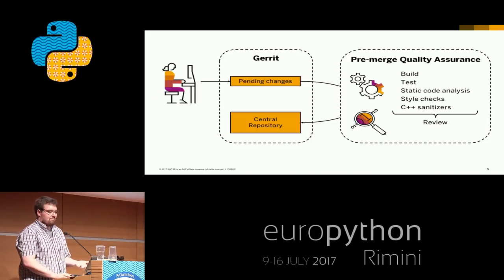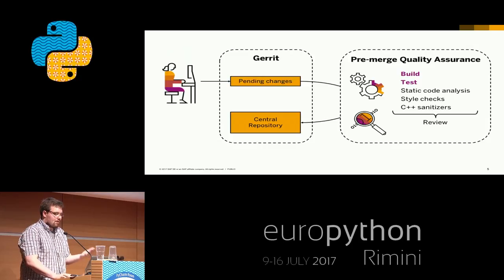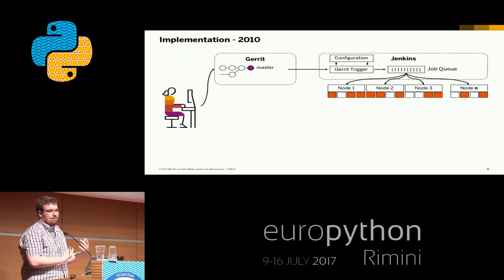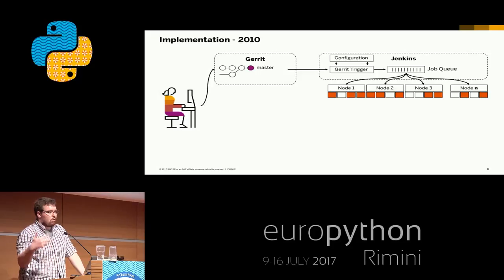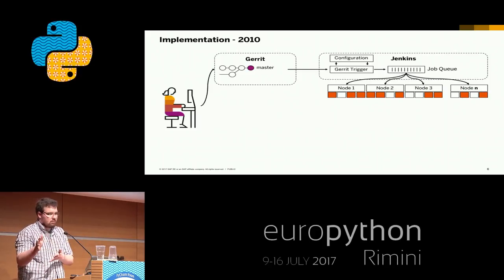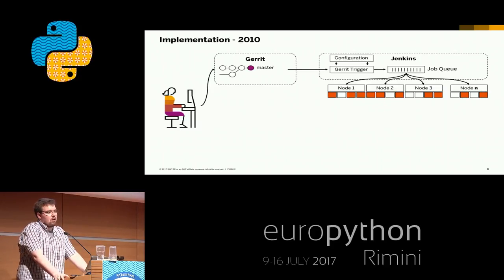To build something like this — it's a very straightforward continuous integration landscape. The developer pushes to Gerrit. Gerrit notifies our Jenkins CI server about a new change. Jenkins looks into the configuration, maybe there's a job configuration for it, and then triggers the job, placing it in a queue. If there are nodes with available resources, one node will grab the job from the queue and execute it. Very straightforward.